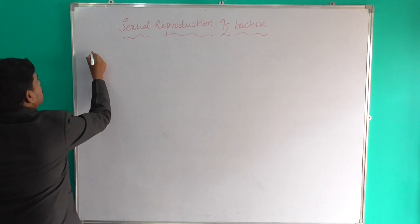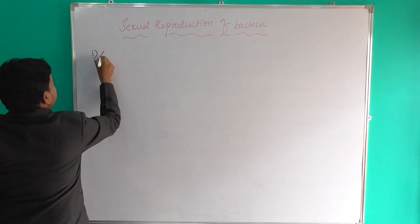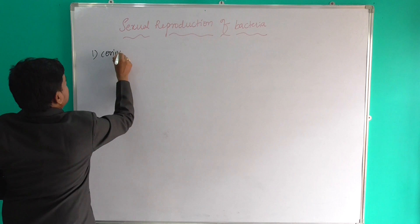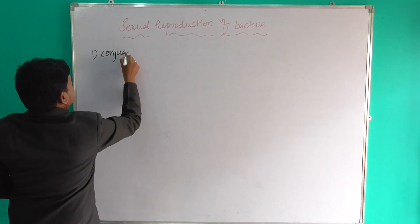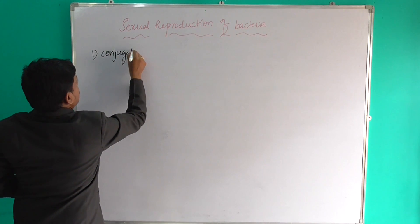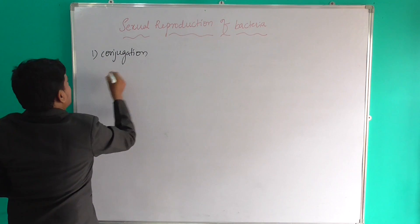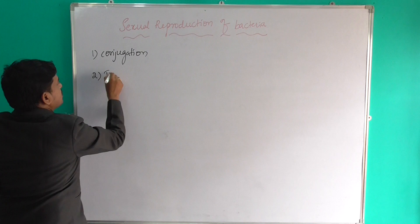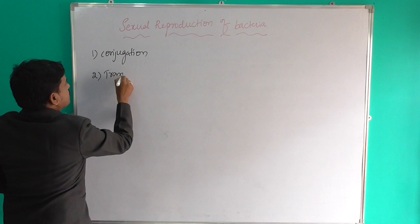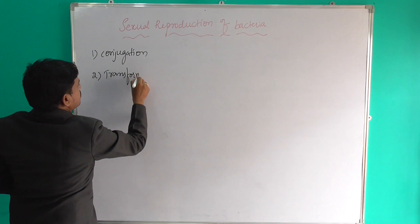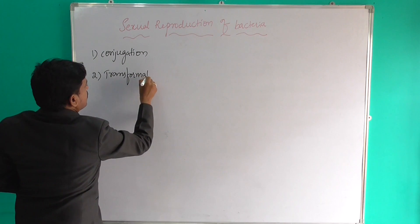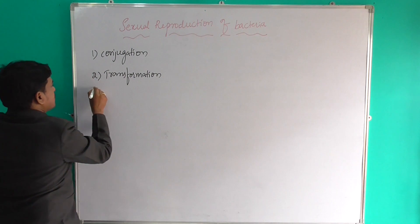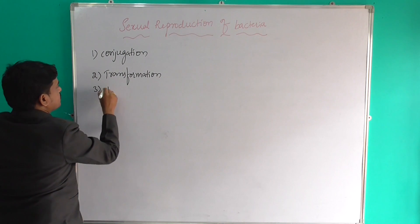The three types of genetic transfer in bacteria are: first, conjugation; second, transformation; and third, transduction.